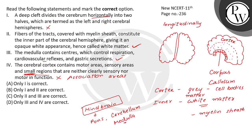So statement one is incorrect, statements two and three are correct. Only one and two being correct is wrong. The correct option here is option C — second and third only. For more information, refer to NCERT Class 11, page number 236. Thank you.